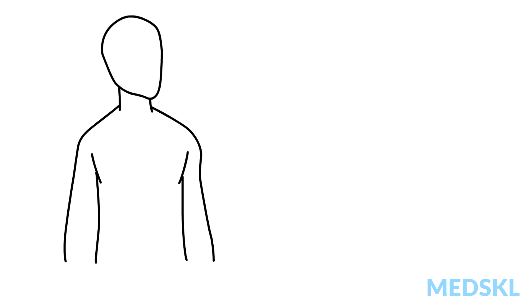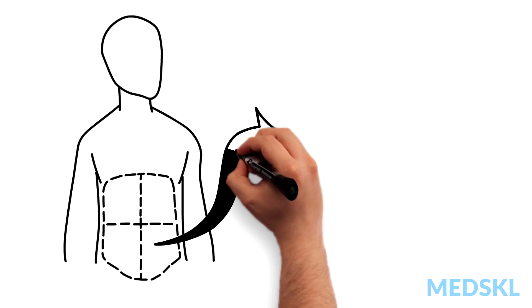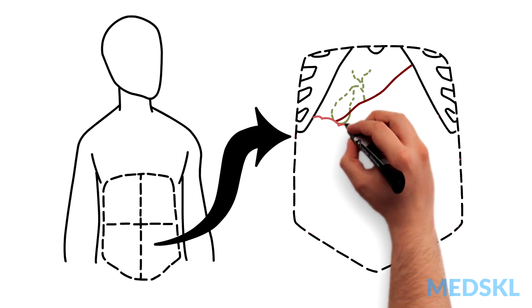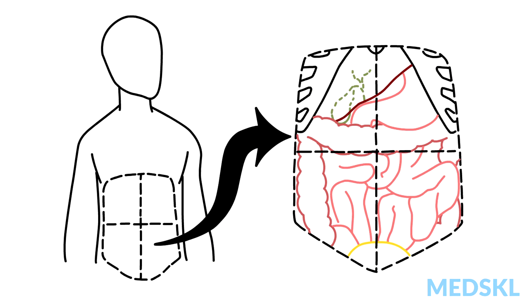Remember that the abdomen can be divided into four quadrants. If you keep in mind the anatomical structures in each quadrant, your list of differentials will be more focused.